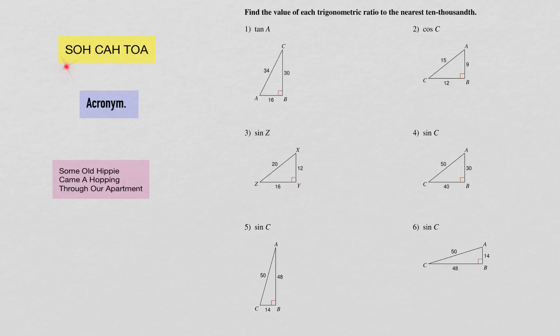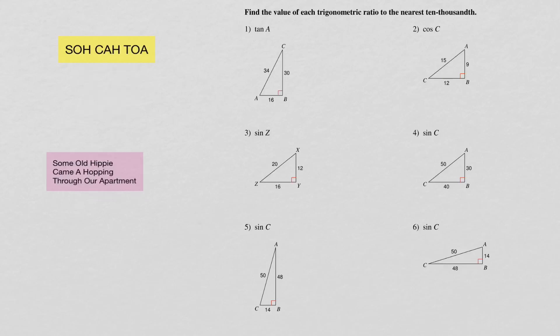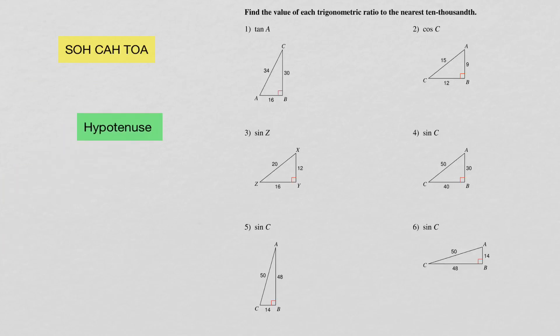Some old hippie came hopping through our apartment. You need to know this SOHCAHTOA. Now, the other thing you need to know is which side is your hypotenuse, which side is your opposite, and which side is your adjacent.